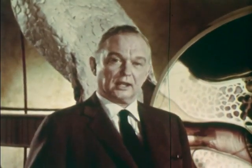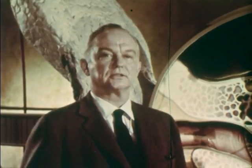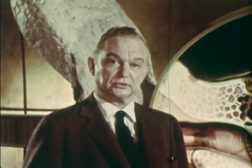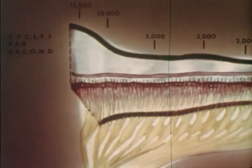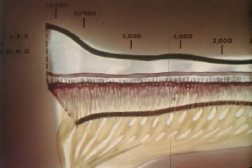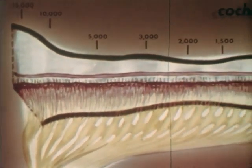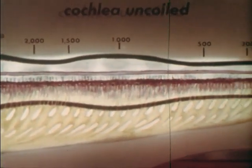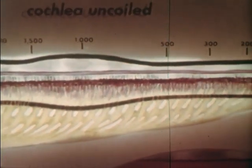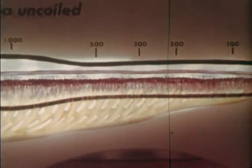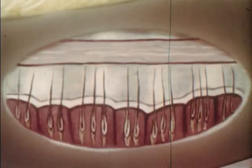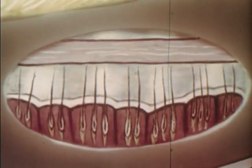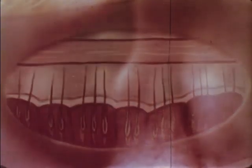No one knows exactly how this happens, but the mechanism that transforms sound into nerve impulses is called the basilar membrane, uncoiled here to study it better. This membrane, which is actually very tiny, supports about 23,000 hair-like nerve endings. When any part of it vibrates, nerve endings are thrust against the overhanging tectorial membrane and we hear.